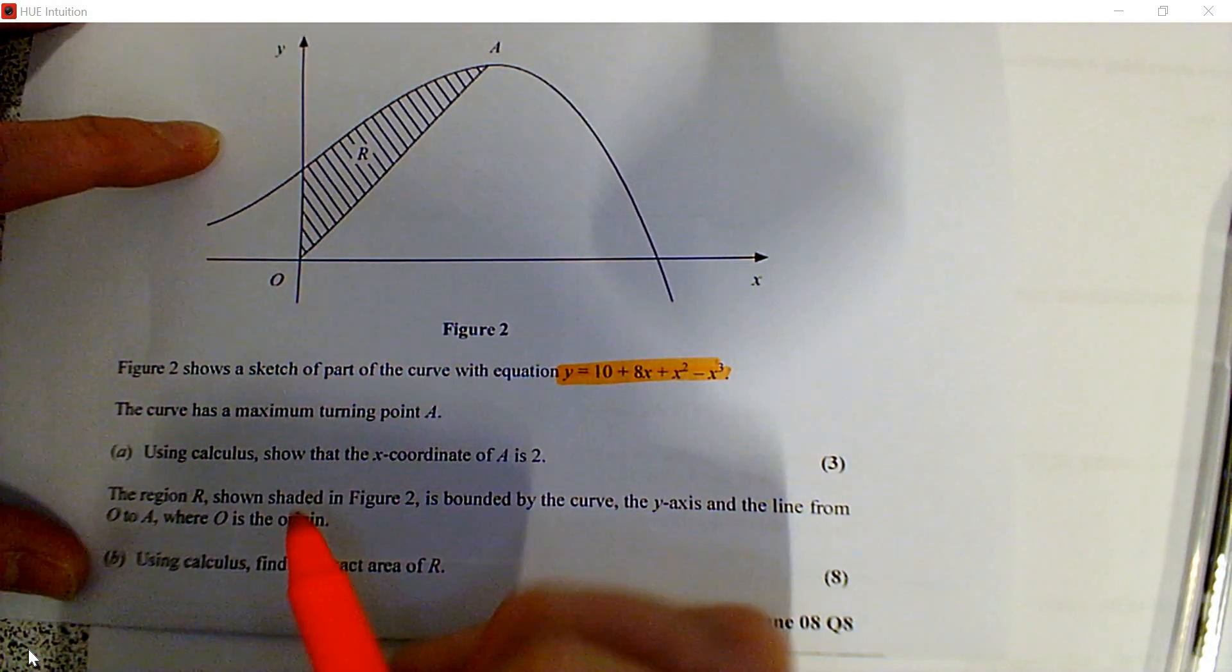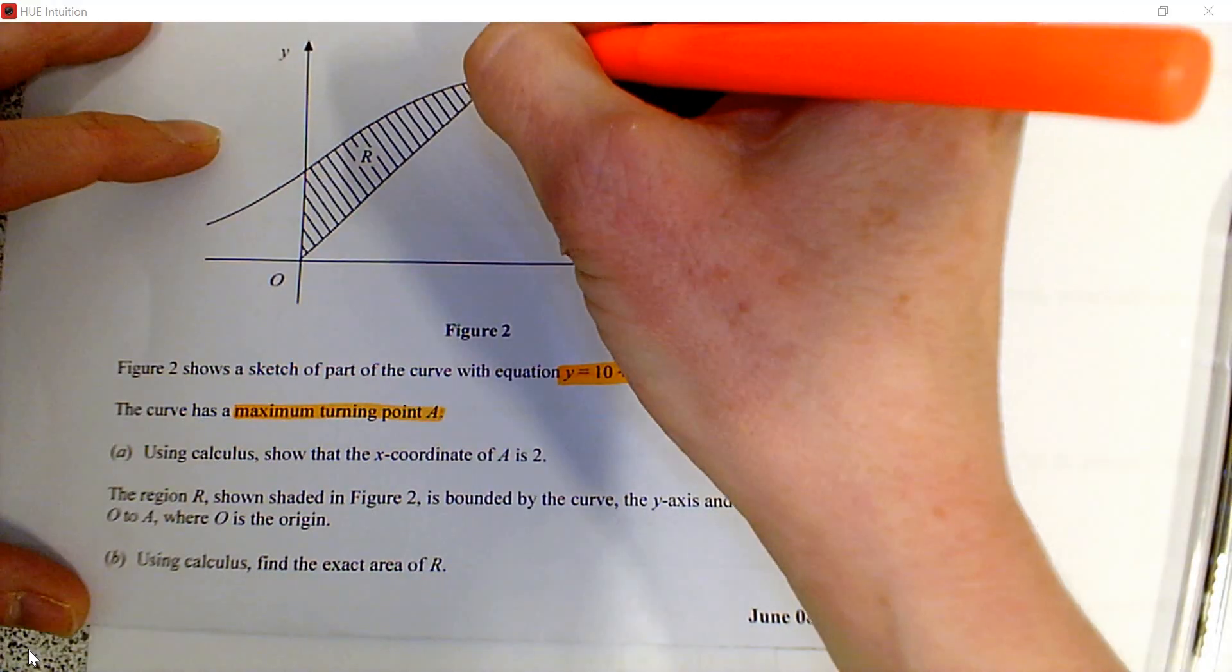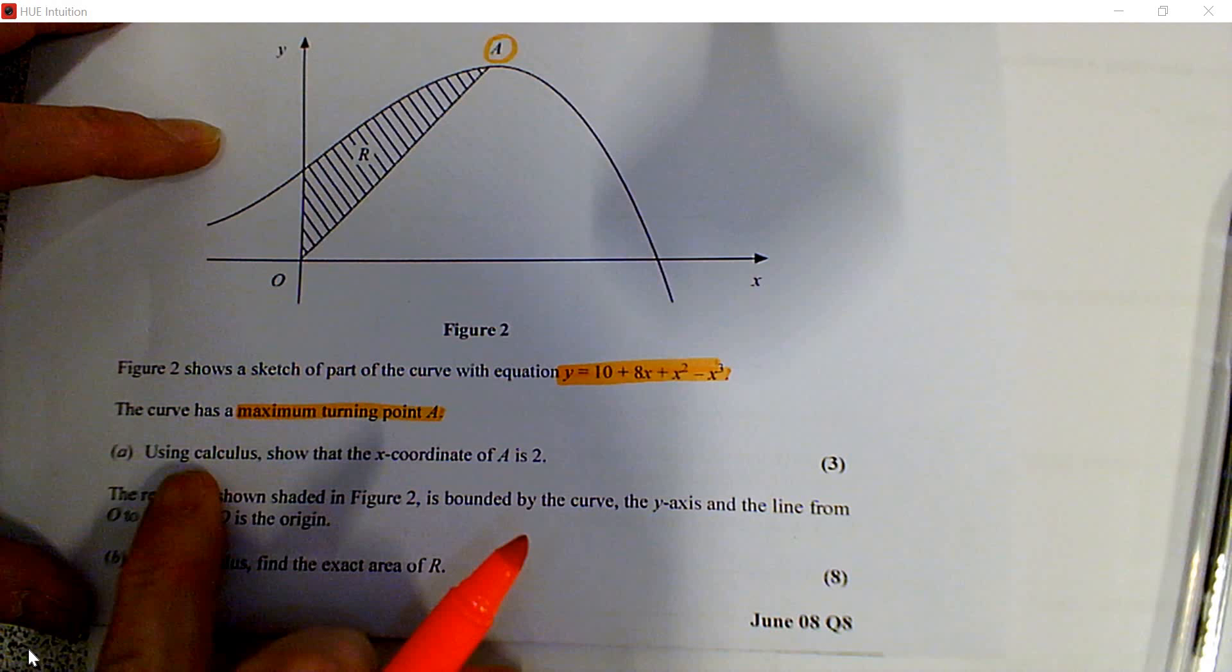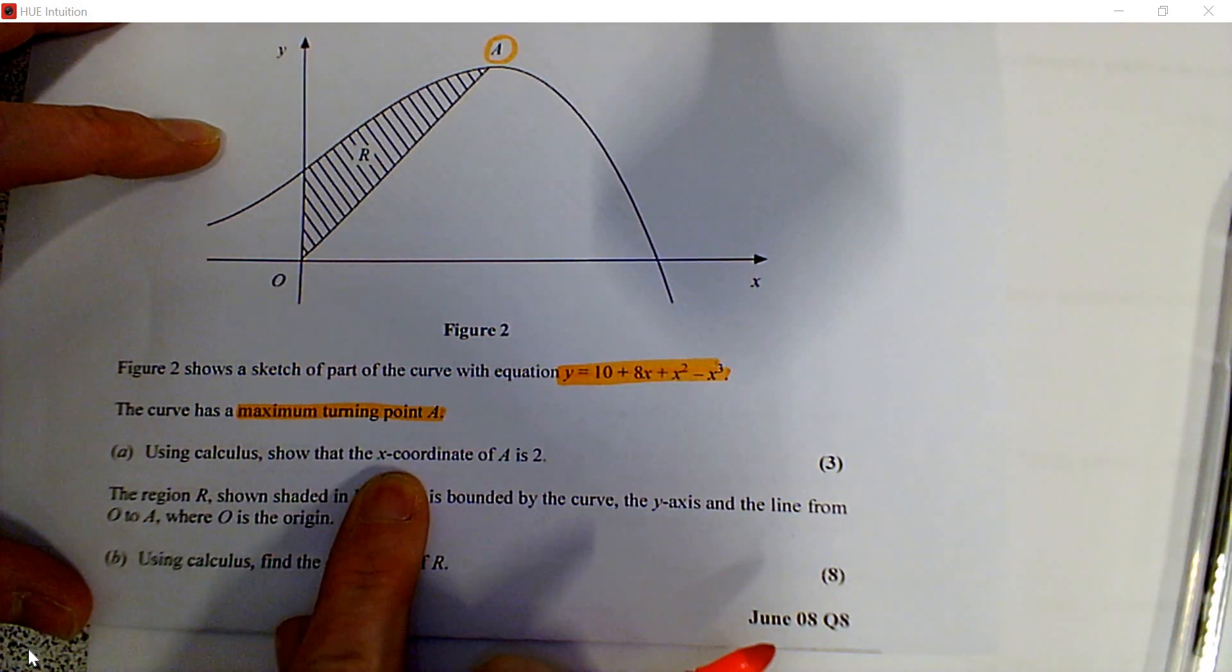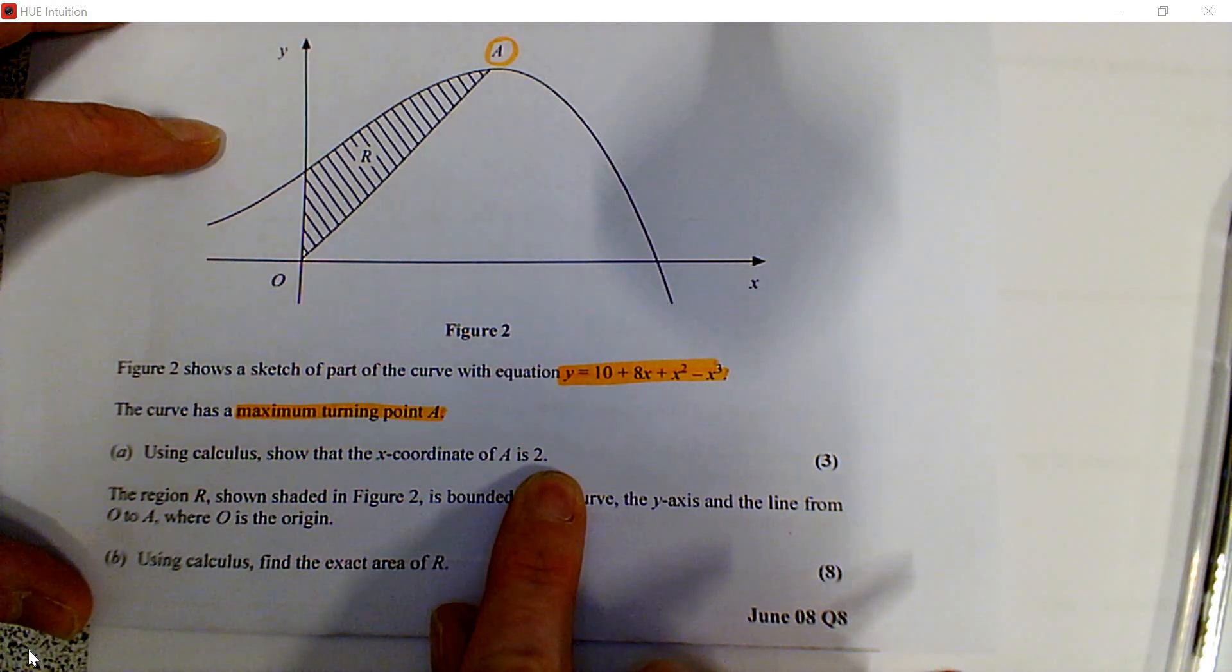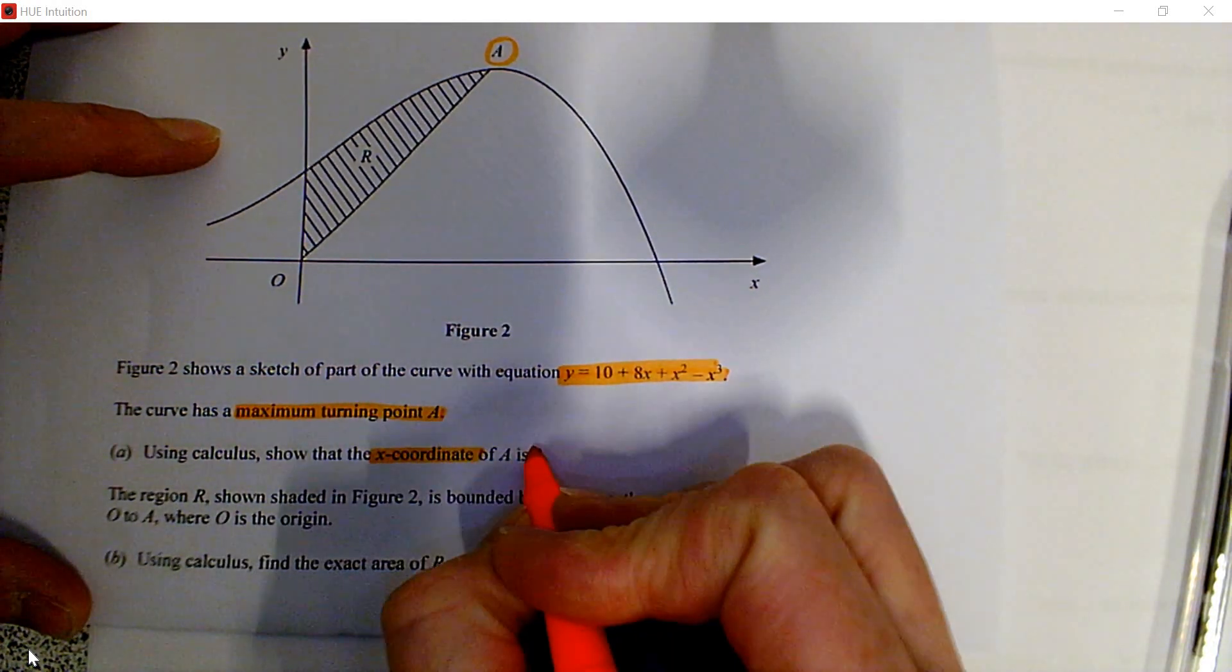The curve has a maximum turning point at A. This is the maximum point. Our first task is to use calculus to show that the x coordinate of the maximum is 2.